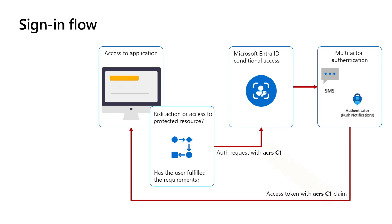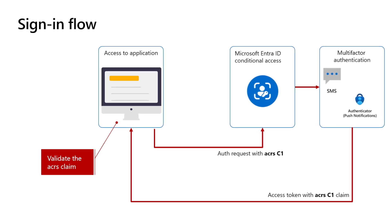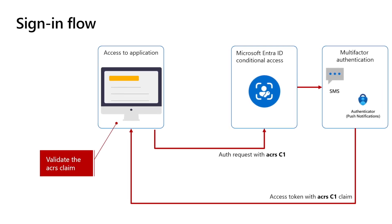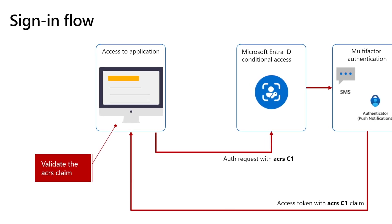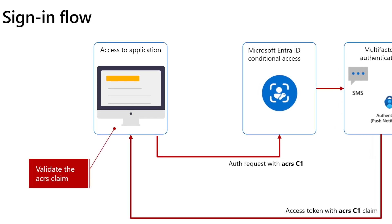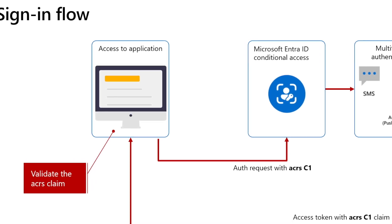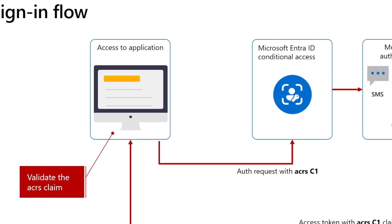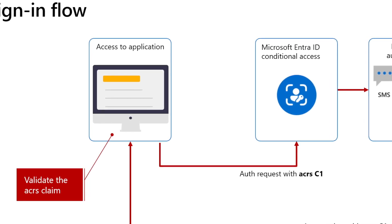This claim indicates that the user fulfills the requirement. For example, if the application asks for C1, the value of the ACRS claim will be C1. The ACRS claim is very important for your application, as it indicates that the user satisfies the application requirements. So, before allowing users to access a protected resource, the application should always check for the ACRS claim value. If the ACRS claim does not exist, or the value is not what the application asks for, the application should not allow the user to access the protected resource or complete the operation.